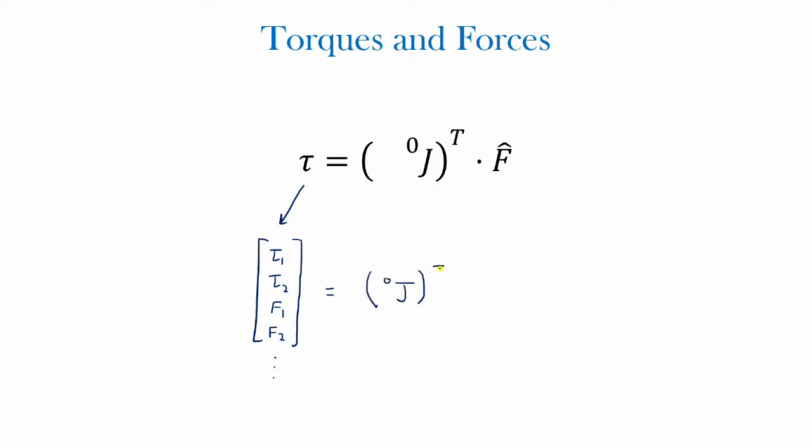So that would be equal to the Jacobian in the base frame, the transpose of that Jacobian—very important that you take the transpose—times the three force unit vectors, which would be Fx, Fy, and Fz. So by substituting in the Jacobian, you would be able to find your torques and forces, or the equations for your torques and forces, in terms of the three force unit vectors.